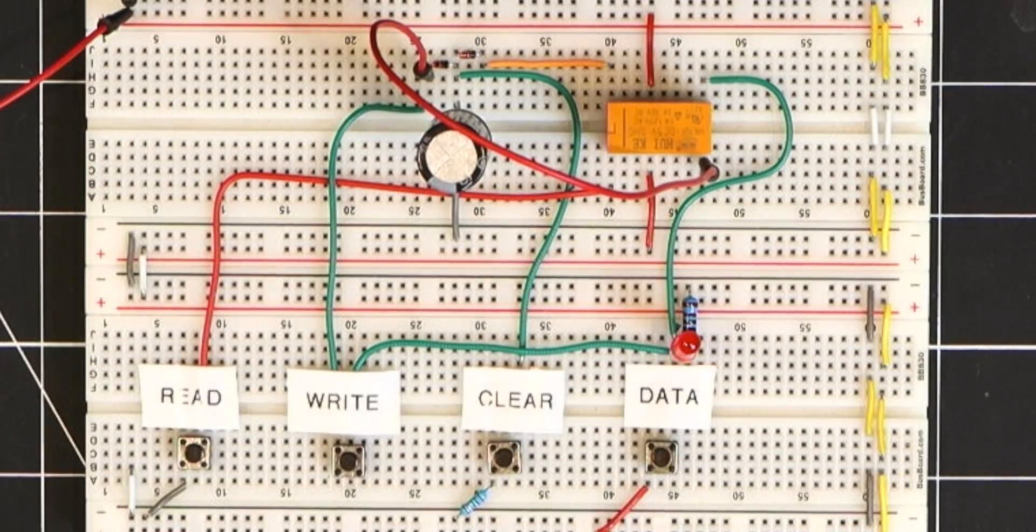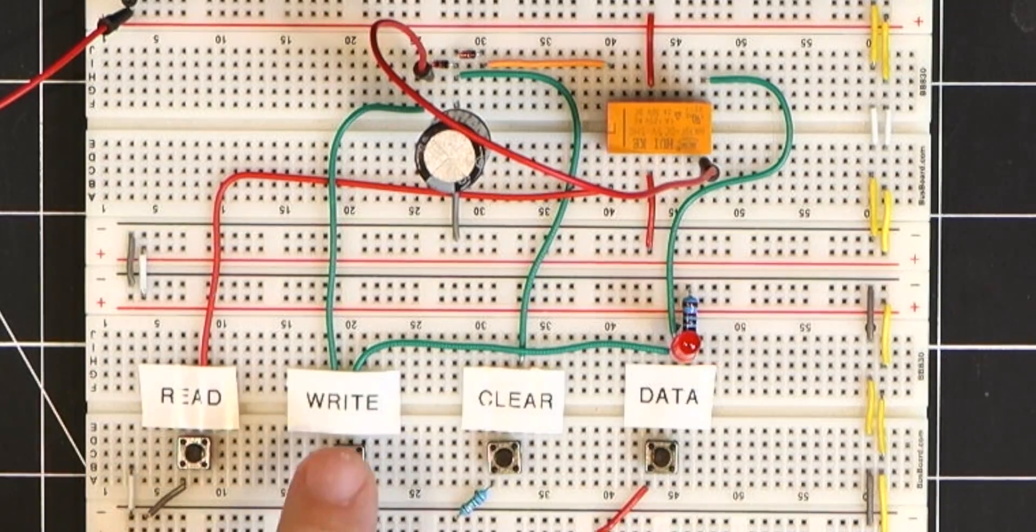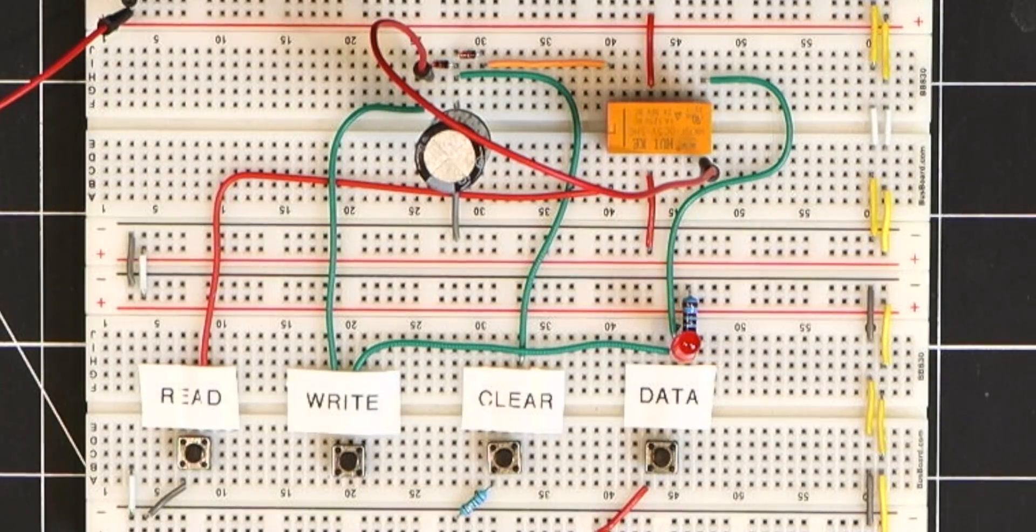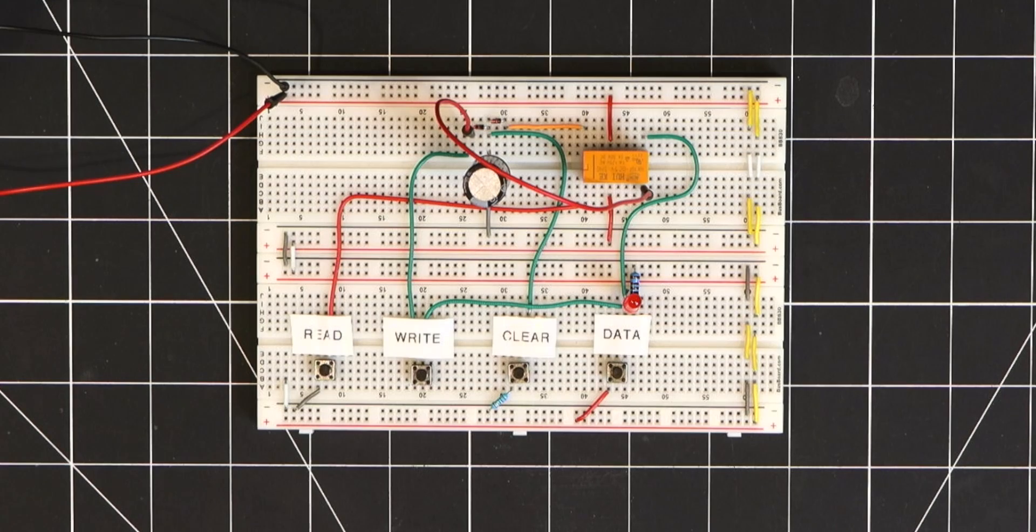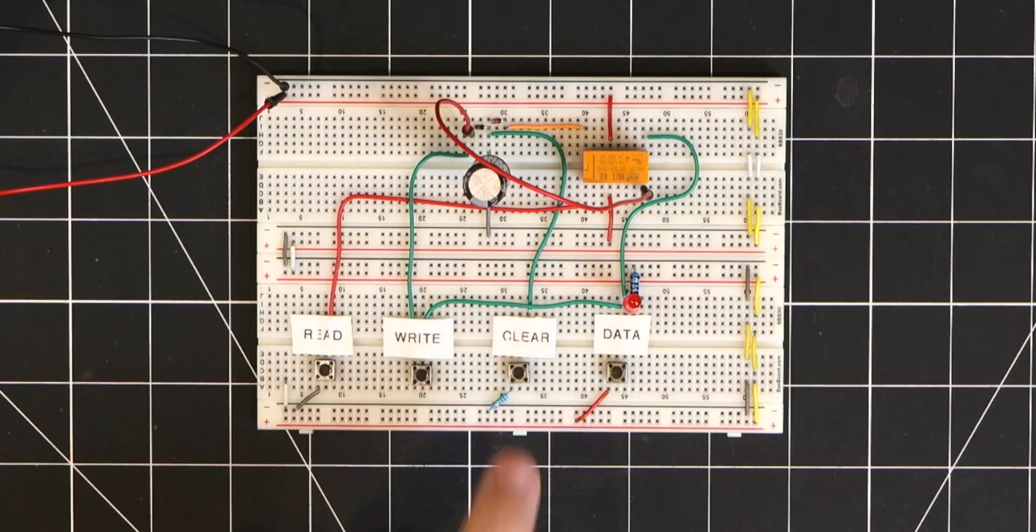Now that we have a value of one stored in our capacitor, let's try to overwrite it with a zero. Ideally we would just perform a write with a zero on the data bus. However this doesn't work here since a write is simply providing zero volts to a capacitor that's already charged. So we need to create an explicit clear function and this simply discharges the capacitor to ground, leaving it cleared for the next write cycle.